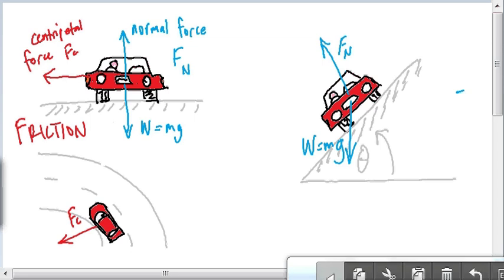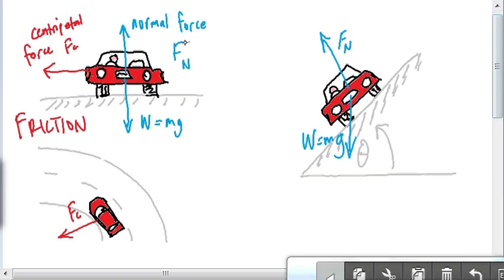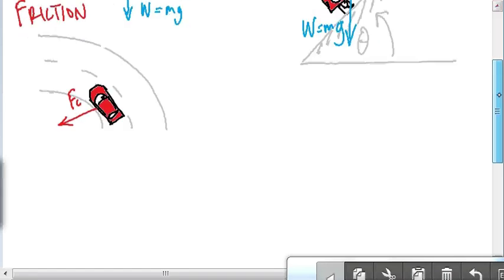But now, because of the banking, there's now also a bit of horizontal force in the normal force. We call it the horizontal component of the normal force. Usually, that would be zero on a flat road, and as it gets steeper and steeper, the horizontal becomes greater and greater of the normal force.